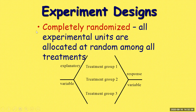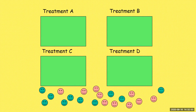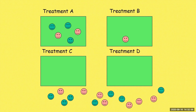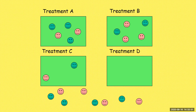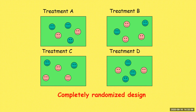The first is completely randomized. Completely randomized is similar to SRS in sampling — all experimental units are allocated at random among all treatment groups. Notice each box has about equal blues and pinks — completely randomized.